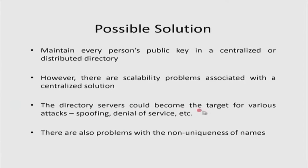Another problem is that directory servers could become targets for attacks like spoofing and denial of service. There are also problems with the non-uniqueness of names — for example, asking for 'Rajesh Singh's public key' is ambiguous because there could be hundreds of people with that name. So there are several problems with the centralized or distributed approach. An alternative solution that seems to be working today is the use of digital certificates.